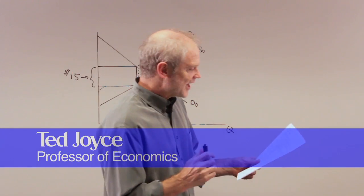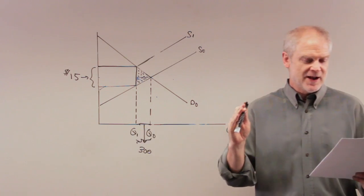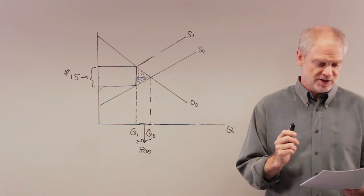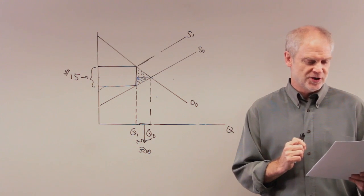It says for good X, the supply curve is the typical upward sloping straight line. The demand curve is the typical downward sloping straight line. A tax of $15 per unit is imposed on the good.